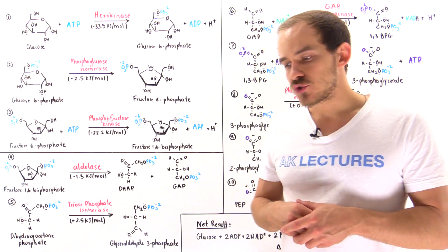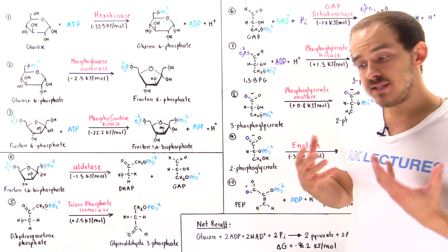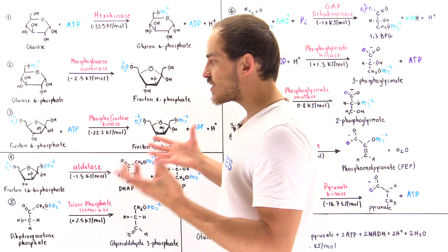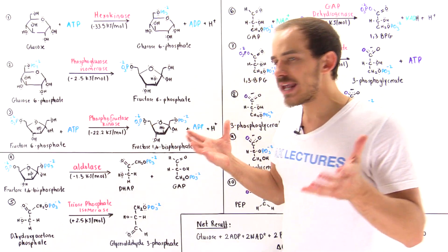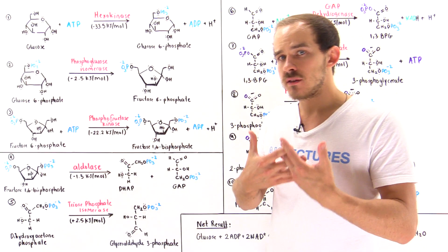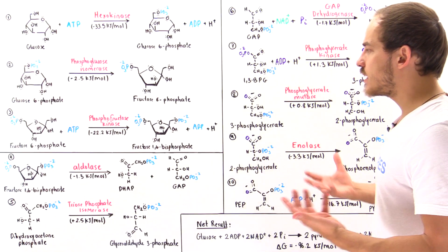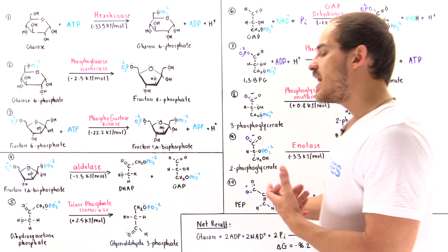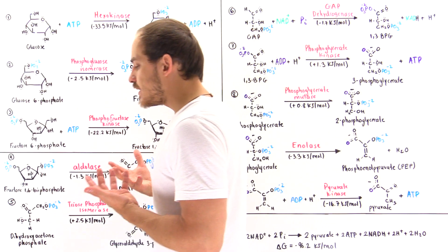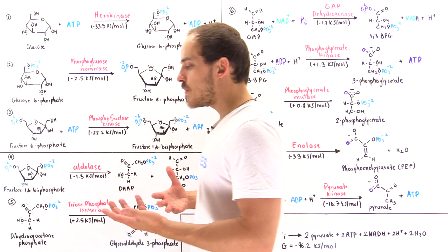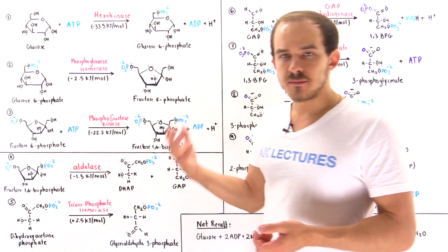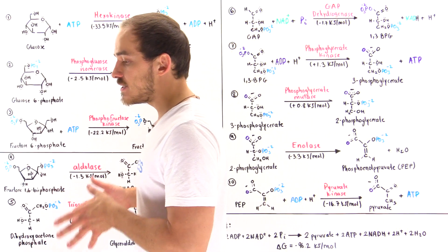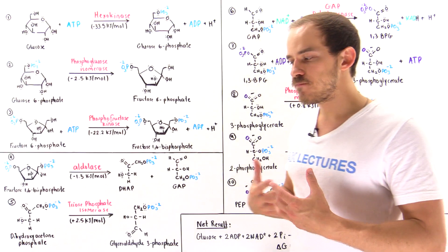In the previous several lectures, we discussed the details of the three stages of glycolysis. So now let's put all that information together into a single lecture to make sense of things and summarize our results. Glycolysis is the breakdown of glucose into pyruvate molecules, ATP molecules, and NADH molecules, and all this takes place in the cytoplasm of the cell.